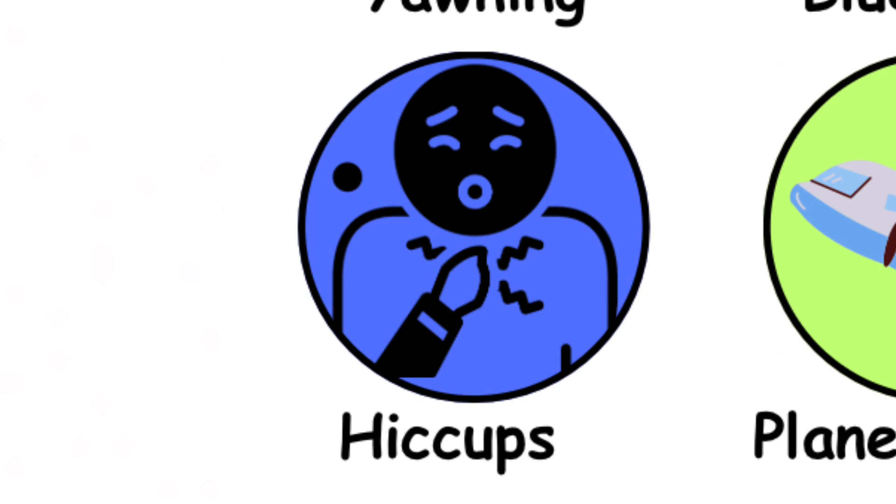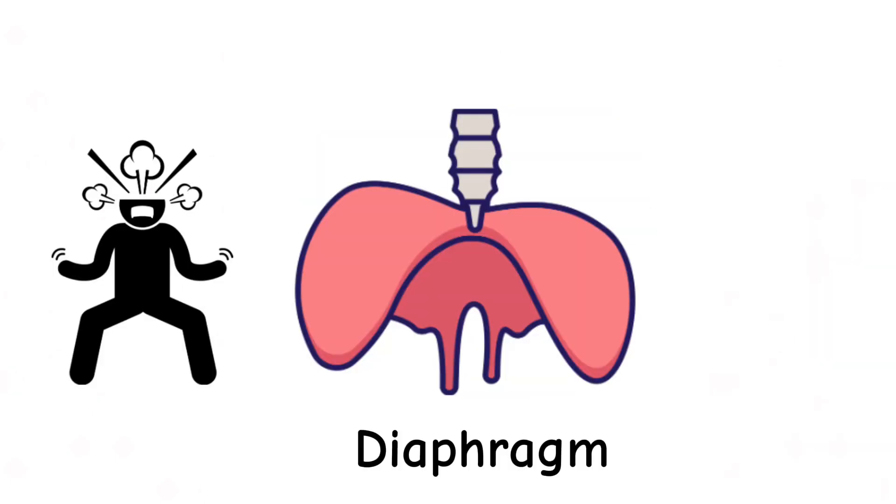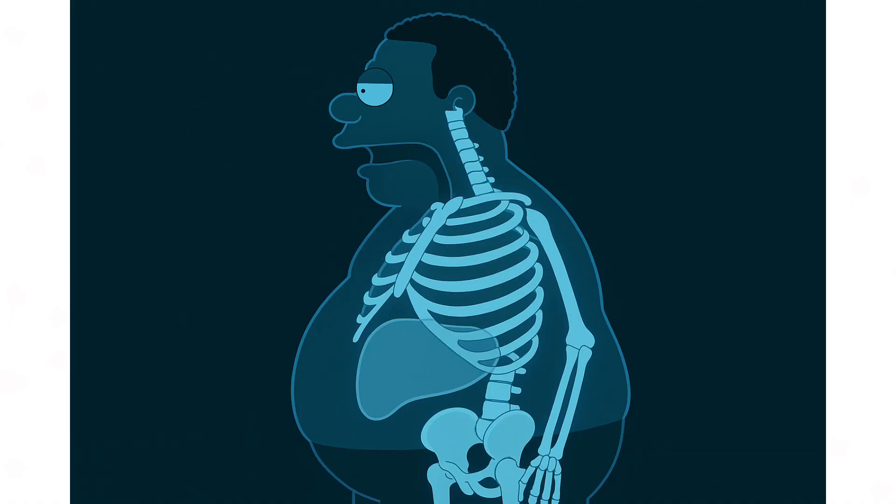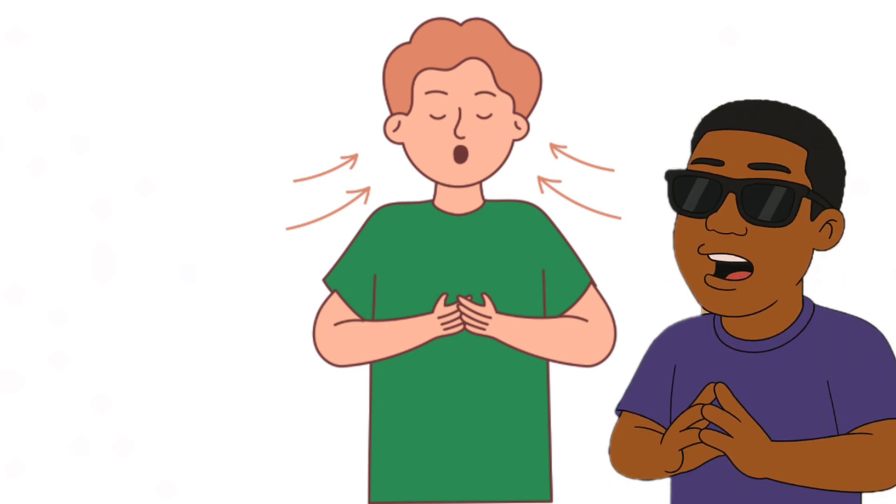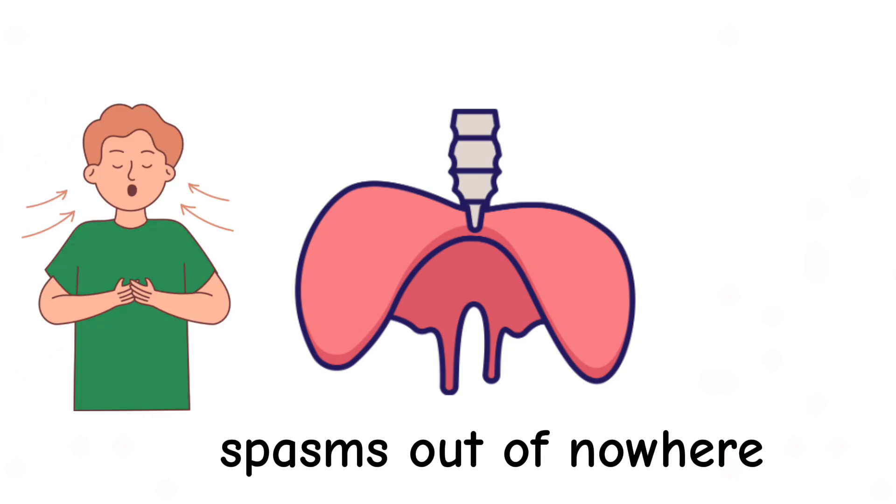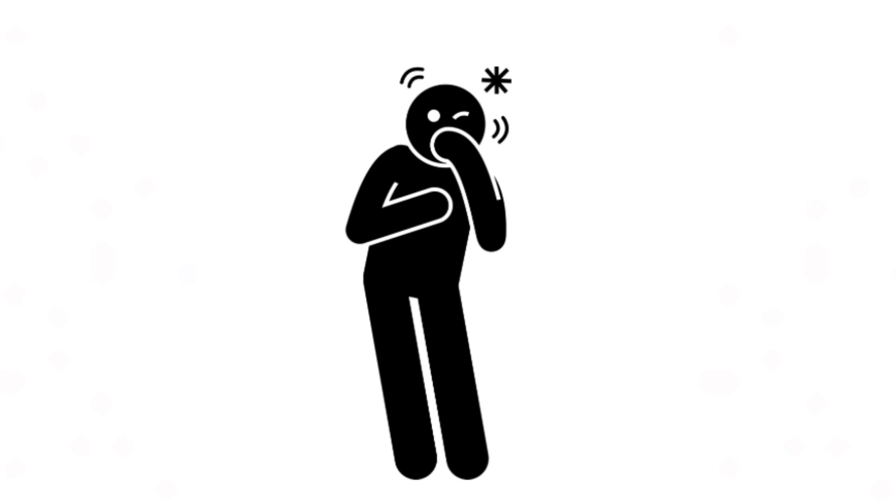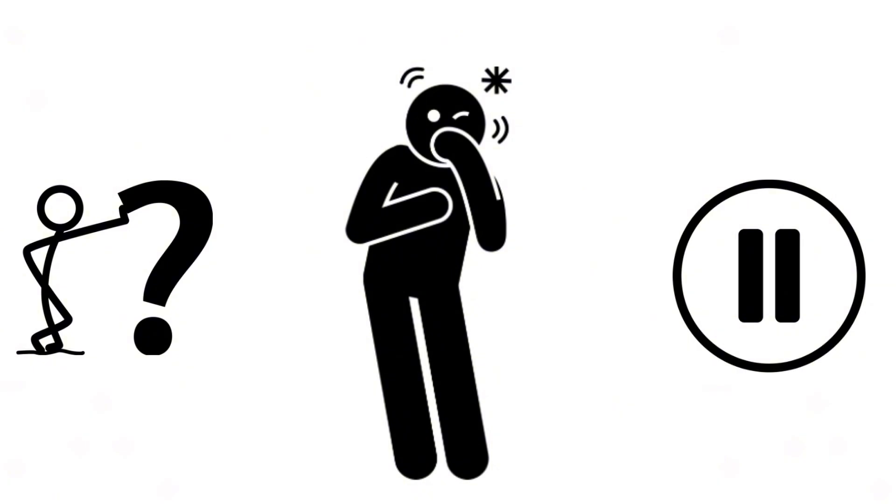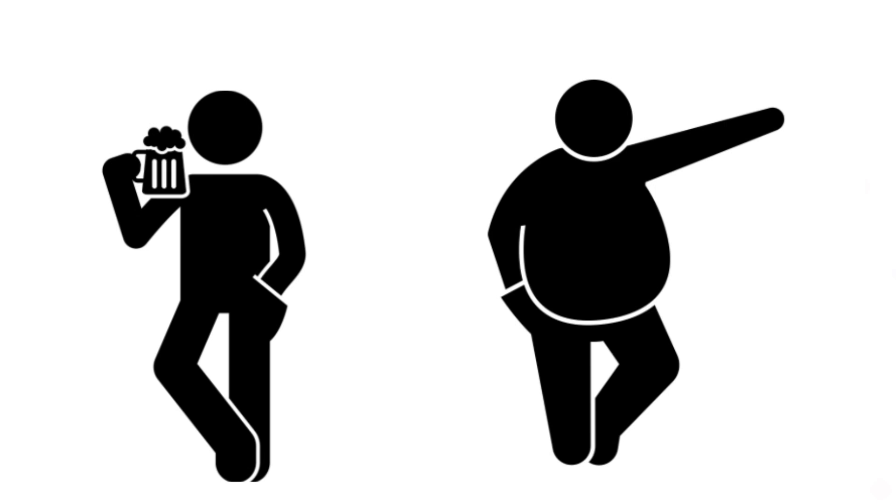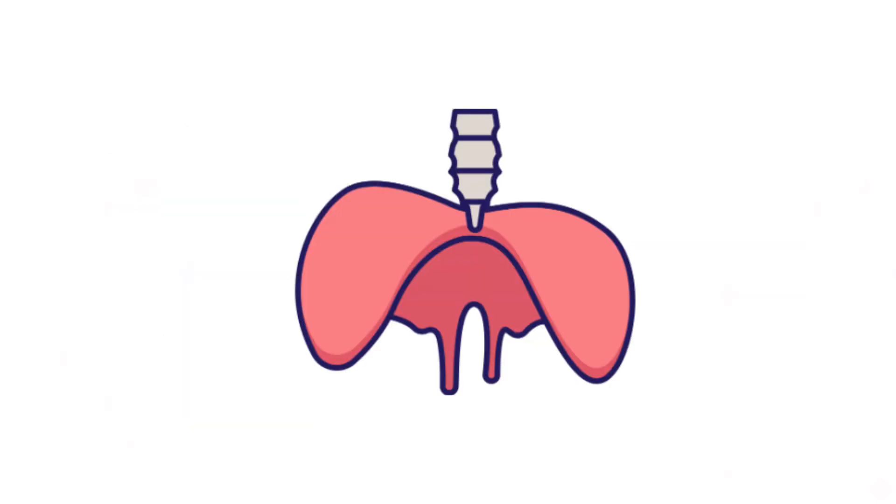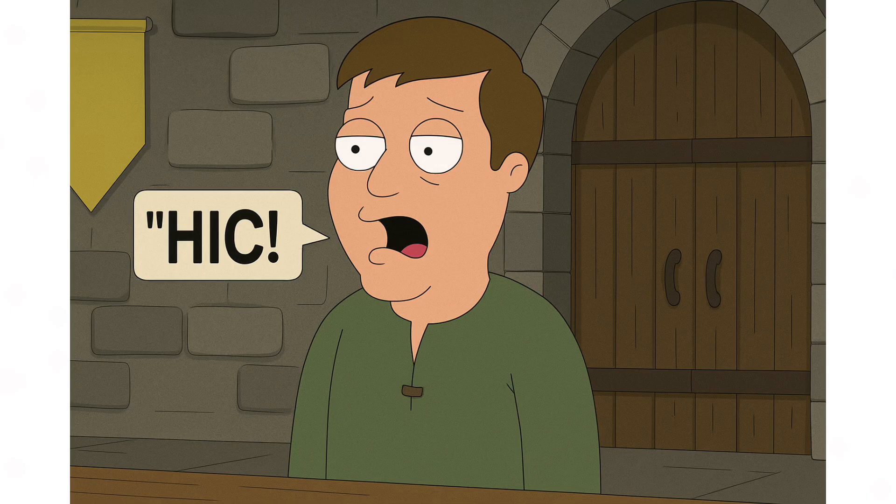Why we hiccup? Hiccups are basically your diaphragm throwing a temper tantrum. The diaphragm is the big dome-shaped muscle sitting under your lungs that helps you breathe, down when you inhale, up when you exhale. Most of the time it's perfectly civil, but every now and then it spasms out of nowhere. When that happens, you suck in a sudden gulp of air, your vocal cords slam shut, and out pops that ridiculous little hic sound. It's like your body hitting the pause button without asking. Why does it happen? Well, pick your poison. Eating too fast, laughing too hard, drinking something fizzy, stuffing yourself until your stomach bulges, it can all irritate the diaphragm.